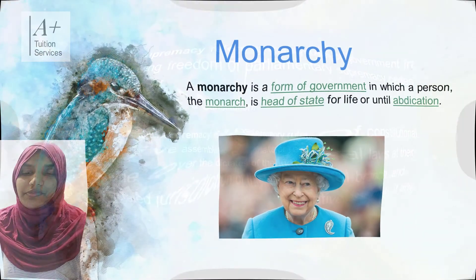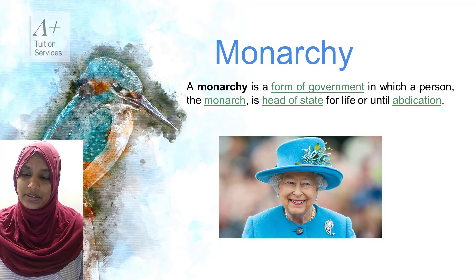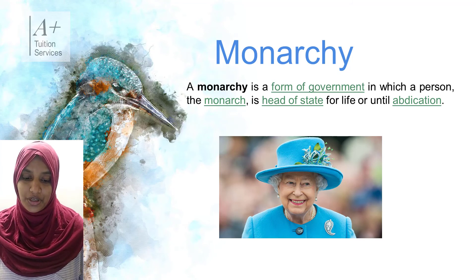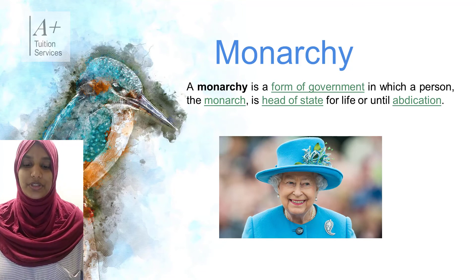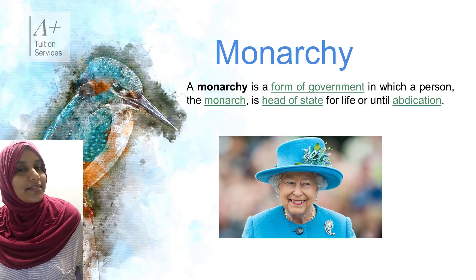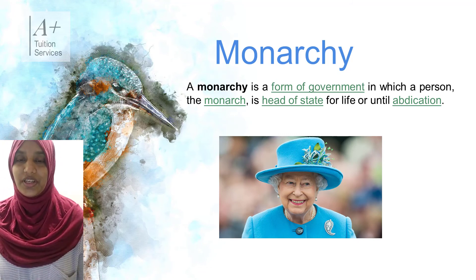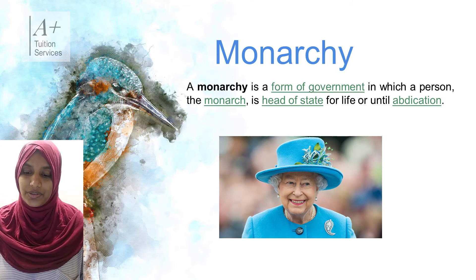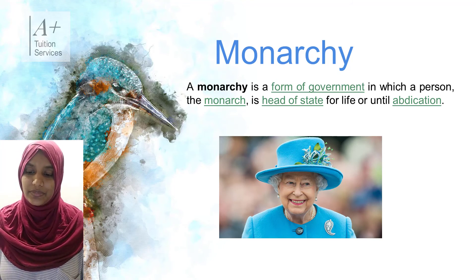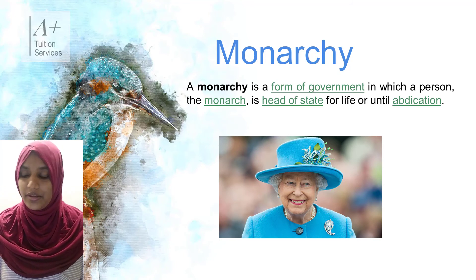Countries that have an unwritten constitution operate under parliamentary supremacy, meaning at any time they can make and change laws in parliament. The third form of government is the monarchy, where a person or monarch is head of state for life or until abdication. Abdication is the act of formally relinquishing a head of state position. In a monarchy system of government, the queen would be the head of state and could govern many decisions across different countries.